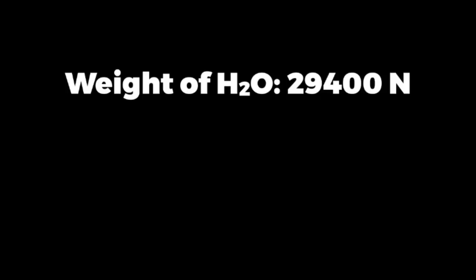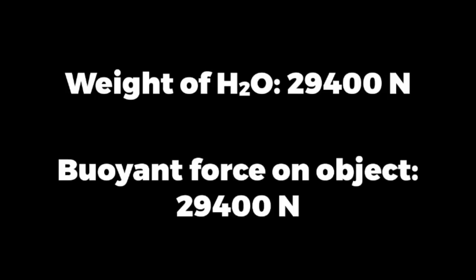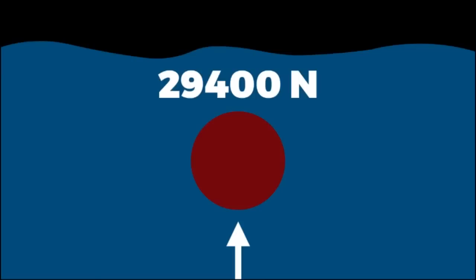Therefore, by Archimedes Principle, the buoyant force is going to be equal to the weight of the water displaced. Therefore, the buoyant force is also going to be 29,400 newtons. So the water, by the buoyant force, is going to be pushing up on the object with a force of 29,400 newtons.